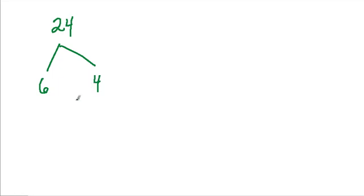And then we can say, well, 6 times 4 is 24, but neither of these are prime. And remember, the reason is a prime number is what? It's a number that has exactly two different factors.